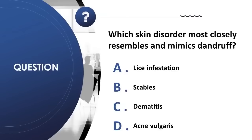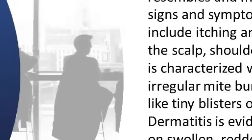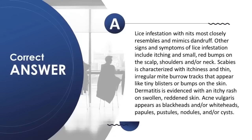Question 18: Which skin disorder most closely resembles dandruff? A) lice infestation, B) scabies, C) dermatitis, D) acne vulgaris. Correct answer is A. Lice infestation with nits most closely resembles dandruff. Signs include itching and small bumps on the scalp, shoulders, or neck. Scabies has irregular mite burrow tracks like tiny blisters. Dermatitis presents with an itchy rash on swollen, reddened skin. Acne vulgaris appears as blackheads, whiteheads, papules, pustules, nodules, and/or cysts.